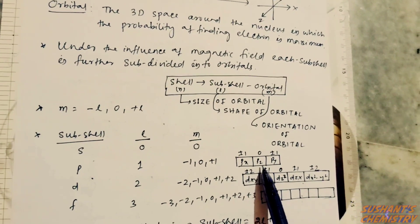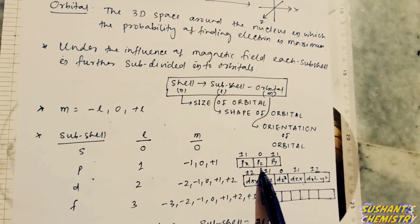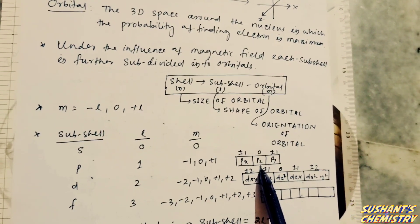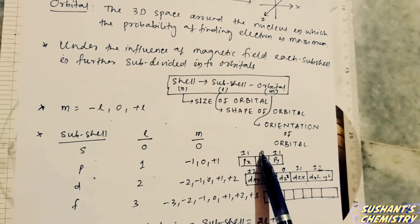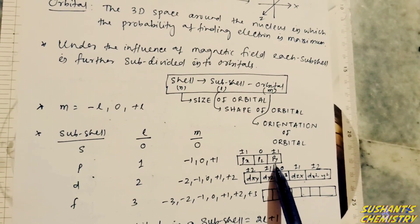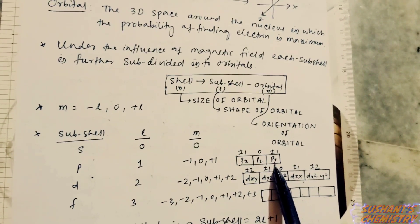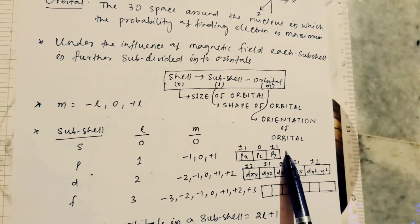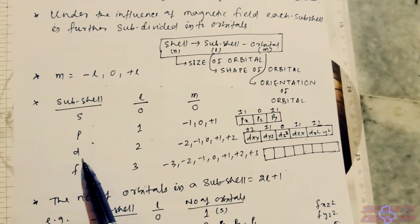For the px orbital, the value of m may be plus or minus one. For the py orbital, the value of m becomes zero. For the pz orbital, the value of m may be plus or minus one.